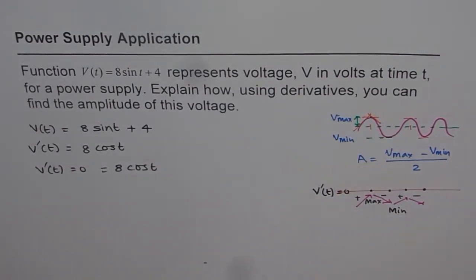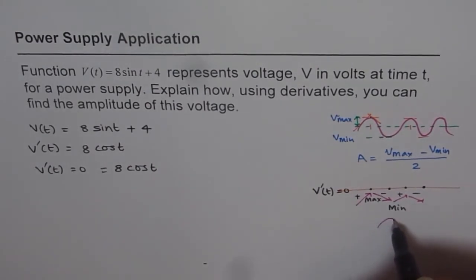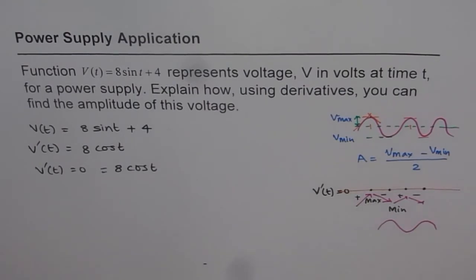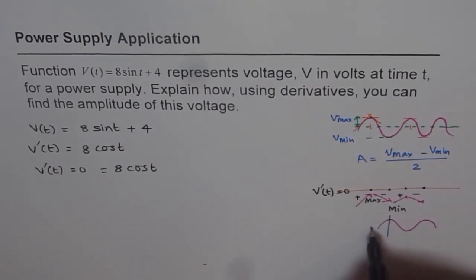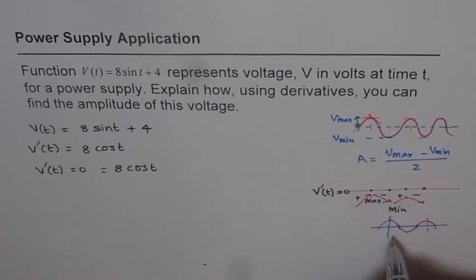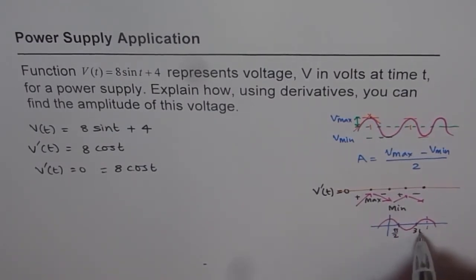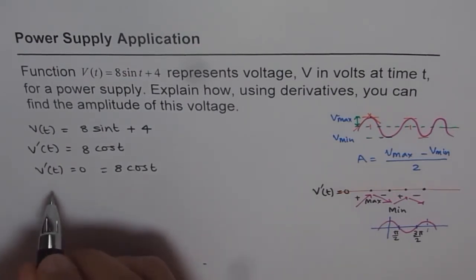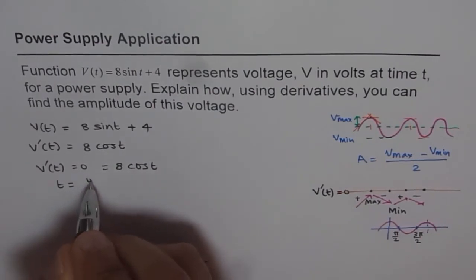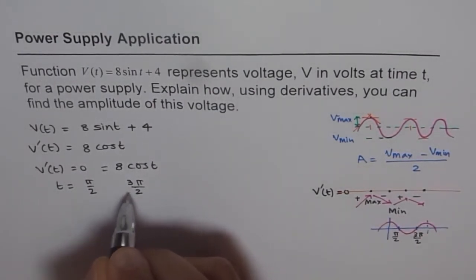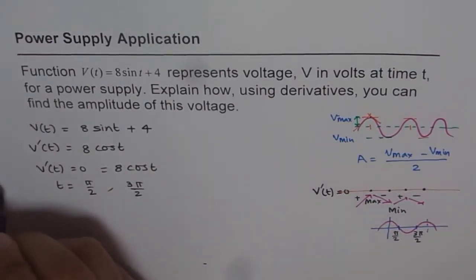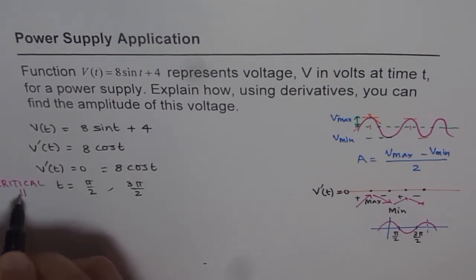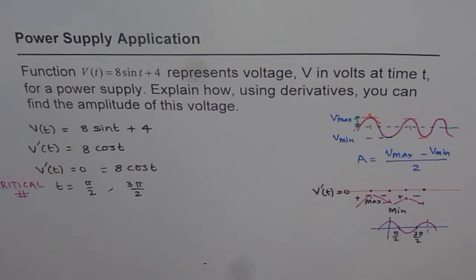Looking at the cosine function, it starts from a maximum and is zero at two points in one wave: at π/2 and 3π/2. So for V'(t) = 0, we get t = π/2 or t = 3π/2. These are the two critical numbers. Since we just have the t values, at these values of t we have a maximum or minimum — but we don't yet know which.